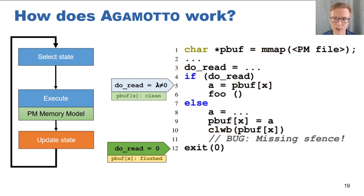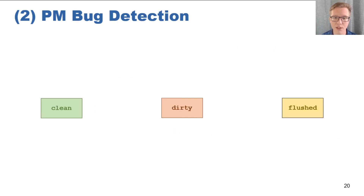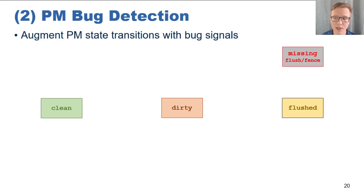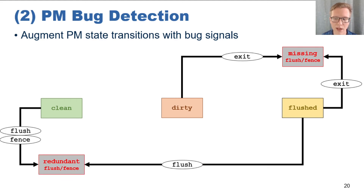Now that we've modeled persistent memory, the next thing we need to do is actually find bugs in persistent memory applications. In this updated example, the highlighted state is about to terminate since it's about to execute an exit call. However, there is a persistent memory bug, as pbuf[x] is flushed but not clean. We detect this bug by augmenting Klee with a set of persistent memory bug oracles, which run after updating the state after every instruction. We implement our application-independent bug finders as bug signals on our state transition diagram. For example, to detect missing flush and fence bugs, we look for an exit condition off of dirty or flushed states. For the redundant flush and fence pattern, we look for when a flush or fence occurs from a clean state, or when a flush occurs from an already flushed state.